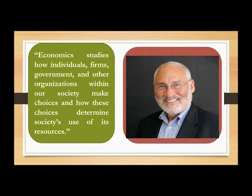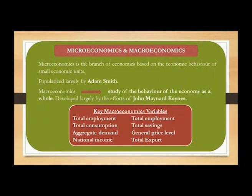Joseph Stiglitz, a world-renowned American economist and recipient of the Nobel Memorial Prize in Economic Science in 2001, states that economics studies how individuals, firms, governments, and other organizations within our society make choices, and how these choices determine society's use of its resources. We know that microeconomics and macroeconomics are the two main branches of economics. Microeconomics is based on the economic behavior of small economic units — it is the study of particular firms, households, individual prices, wages, incomes, individual industries, and particular commodities.